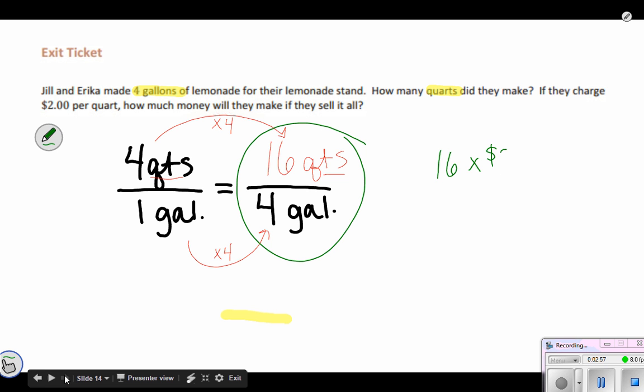So I'm going to go ahead and do 16 times two. I could do it in my head or you could set it up like this: six times two is 12, carry the one, one times two is two plus one more is three. So I've got thirty-two dollars in order to sell all of that.